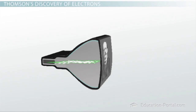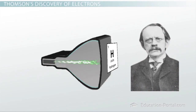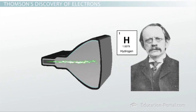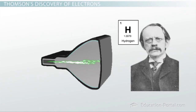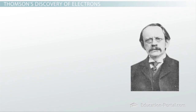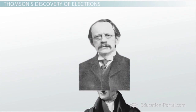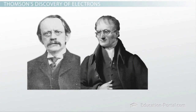He performed many experiments and found that the mass of one of these particles was almost 2,000 times lighter than a hydrogen atom. From this he decided that these particles must have come from somewhere within the atom, and that Dalton was incorrect in stating that atoms cannot be divided into smaller pieces.